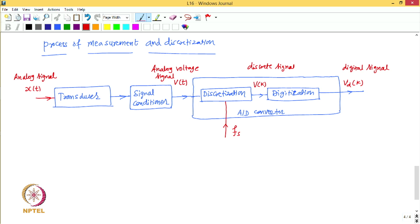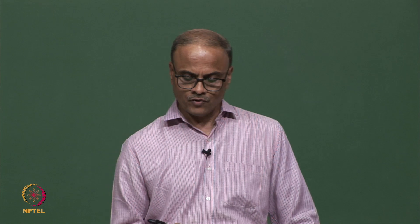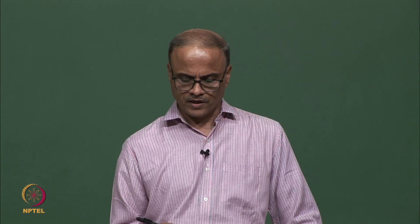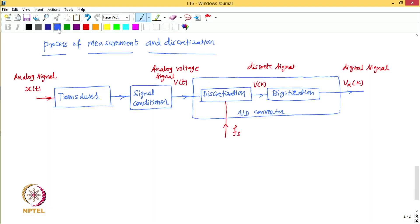These are the broad steps through which the signal undergoes in the process of measurement and discretization. Since we know the sensitivity of the transducer and signal conditioner together, it is possible to retrieve the signal in the units of the original analog signal x(t). We can divide V(k) by the sensitivity of the transducer — expressed in voltage per unit of signal x — to find the discrete signal x(k). In this way, we have understood what a discrete signal is and how it is recorded. Now we are going to see how this signal is analyzed to obtain the frequency domain representation.